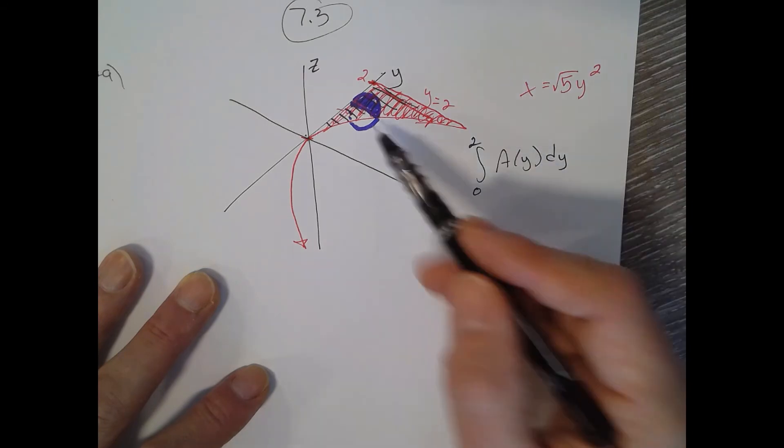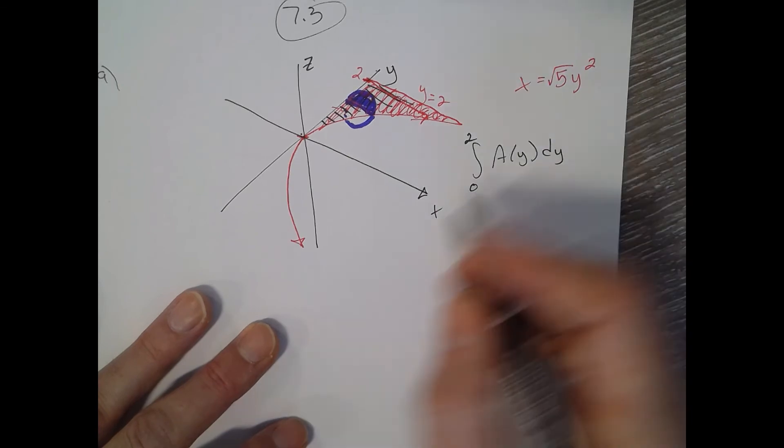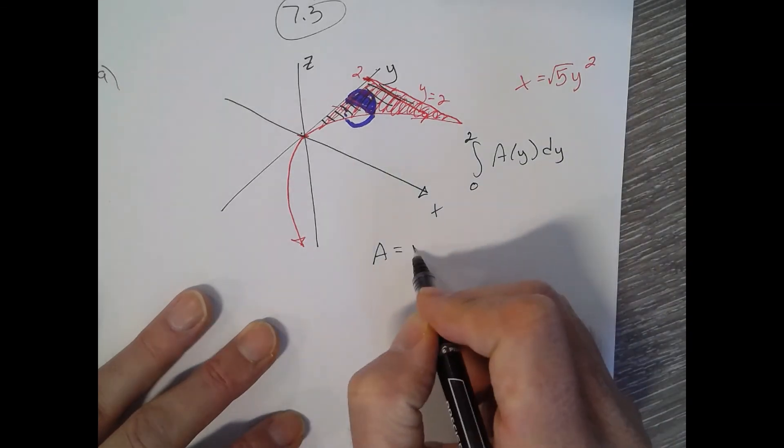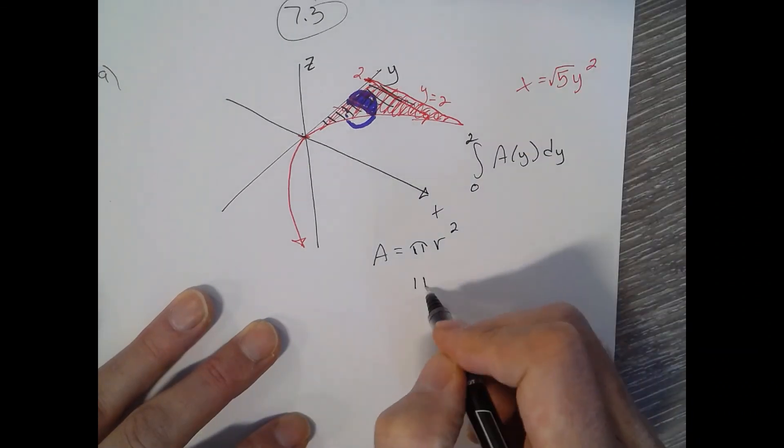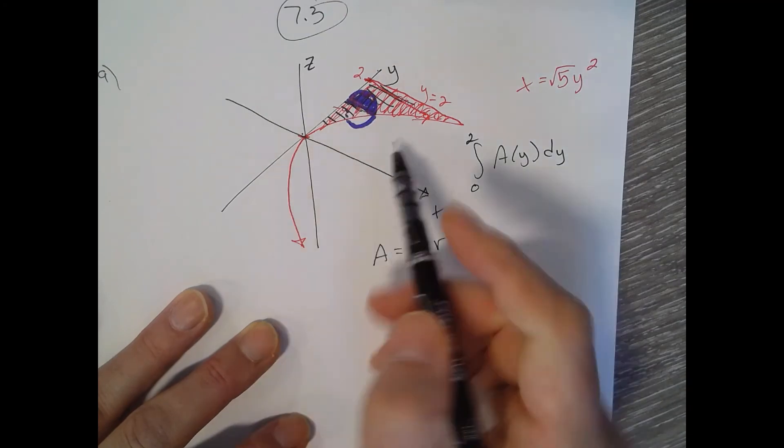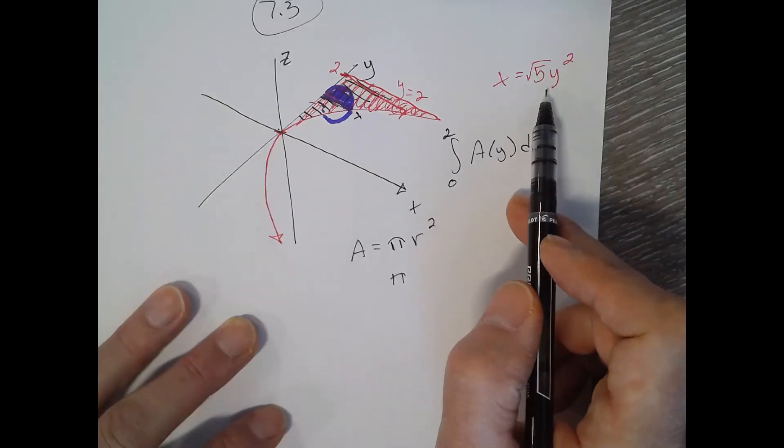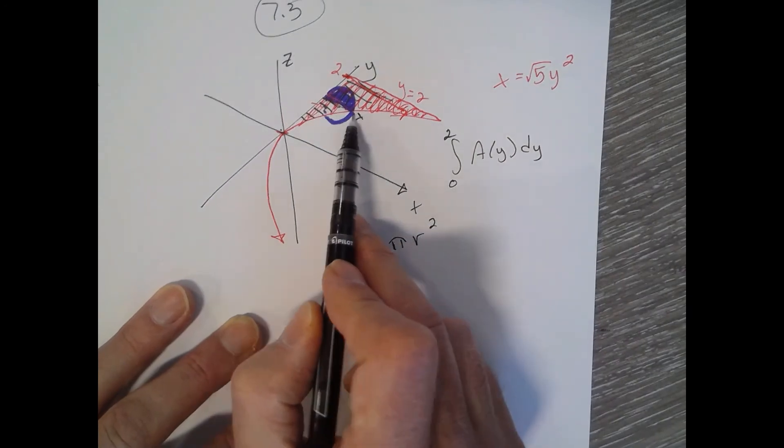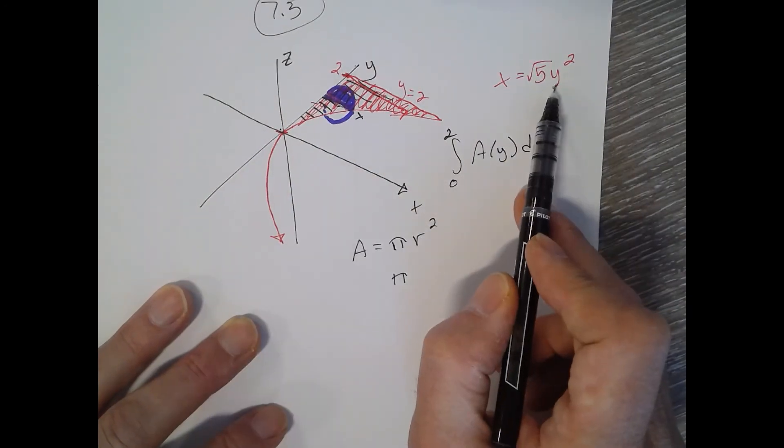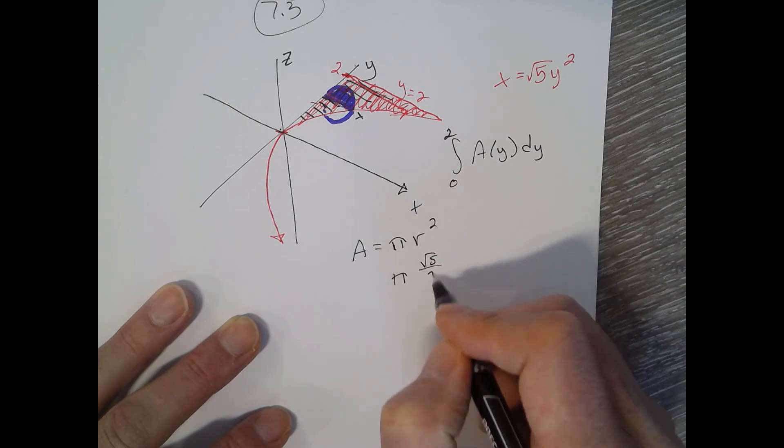All right, so now we have to figure out how to represent that circle as a function of y. We know that the area is pi r squared, and our radius is just half of this. So it's pi times this distance, which is x, which is the square root of 5 y squared. That's what this distance is. So half of that would be our radius, so it's pi times the square root of 5 over 2 y squared.